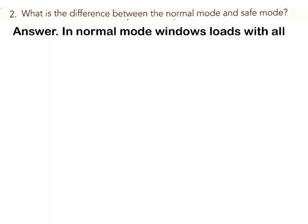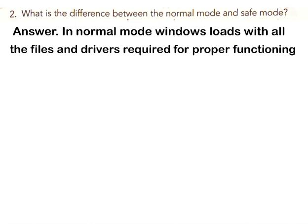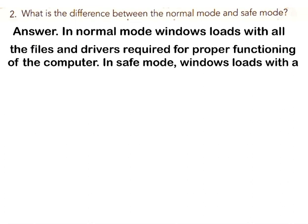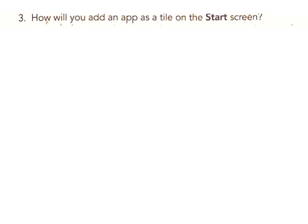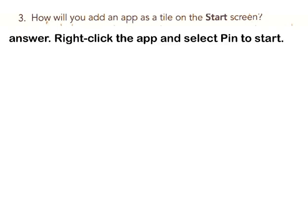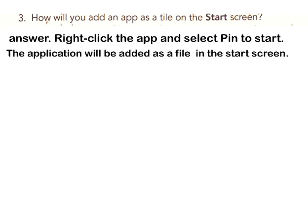Answer: In normal mode, Windows loads with all the files and drivers required for proper functioning of the computer. In safe mode, Windows loads with a limited set of files and drivers. Question 3: How will you add an app as a tile on the start screen? Answer: Right-click the app and select Pin to Start. The application will be added as a tile in the start screen.